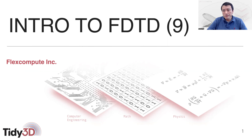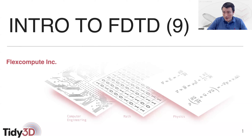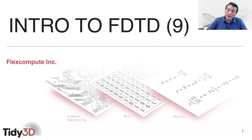Today, we will continue to talk about some of the issues related to how to get accurate results in FDTD simulation. Last time, we talked about the issue of numerical dispersion, which is an important issue in understanding the accuracy of FDTD, both from a practical point of view as well as from a theoretical point of view. Today, I'm going to talk about an issue that probably is not commonly talked about in the theoretical study of FDTD, but in fact is practically quite important.